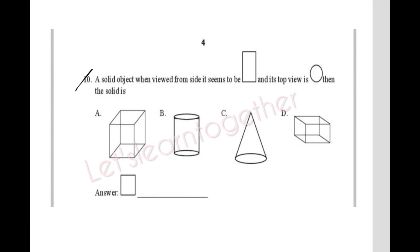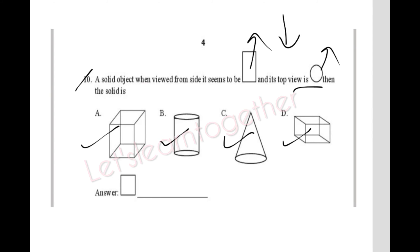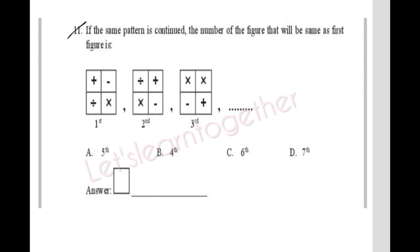Question 10: A solid object viewed from the side appears rectangular, and its top view is a circle (sphere-shaped). Which solid is it? Both a rectangular side view and a circular top view correspond to a cylinder. The answer is option B: cylinder. Draw the cylinder neatly.